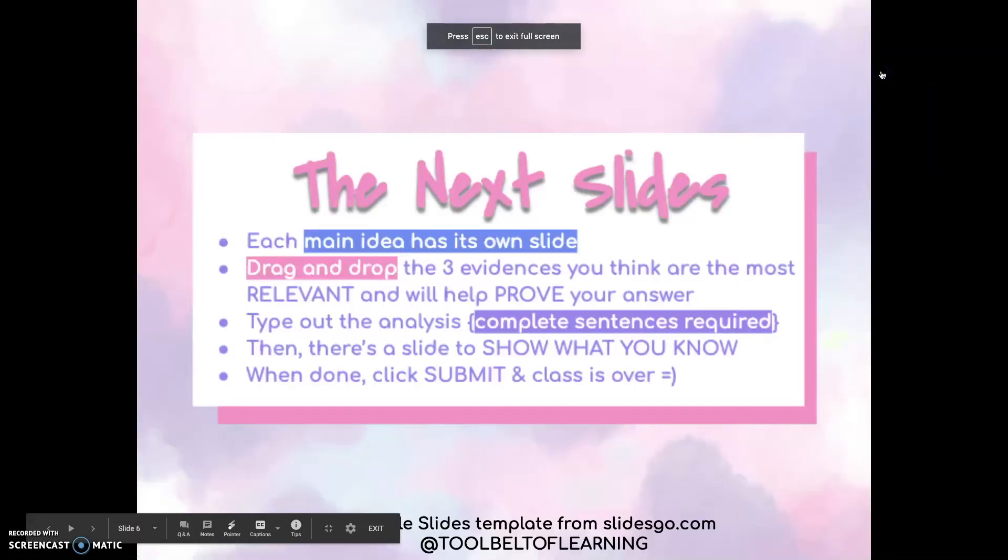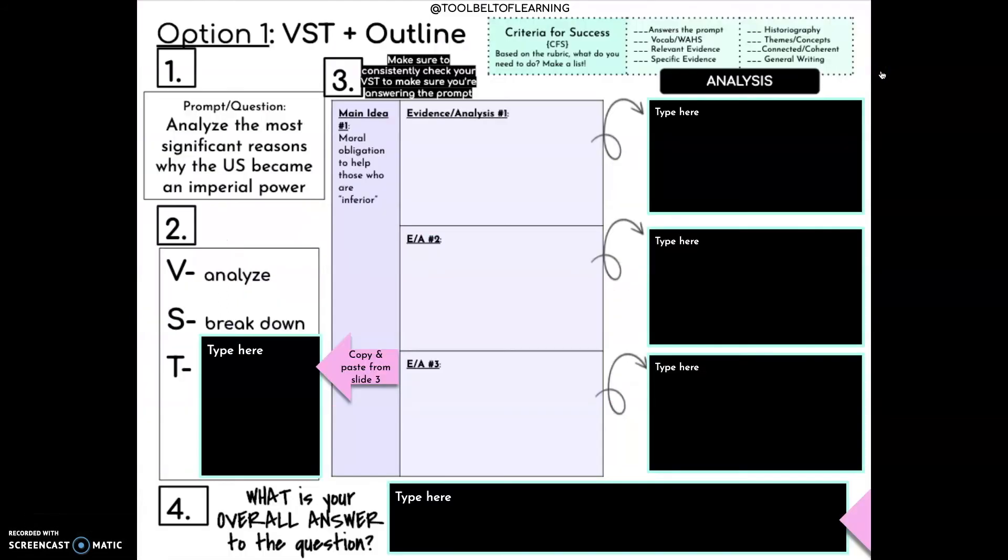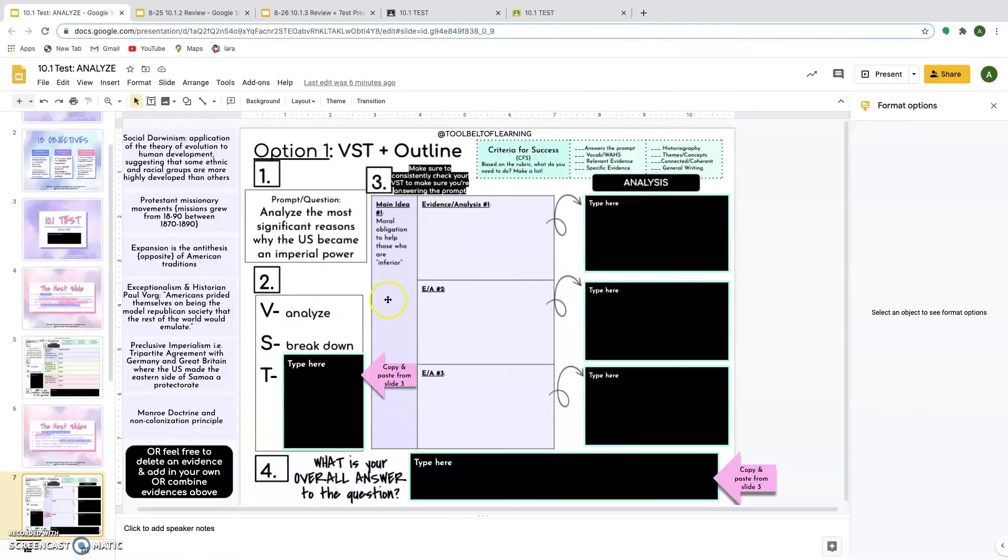Next up, we get to the actual part where they take the test. After they have the big overview, they then are going to go through and really develop this essay outline. This is what they had to do for each main idea.